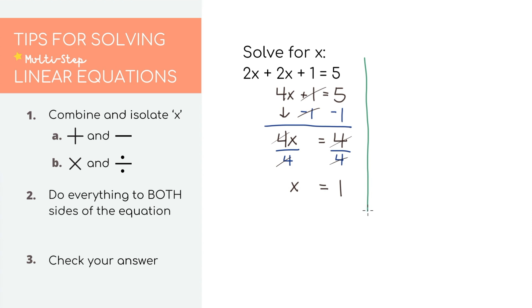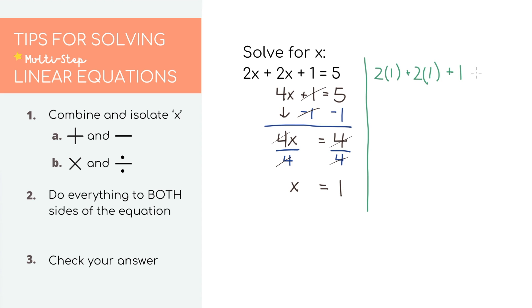Let's check our answer by plugging it back in. We get that 2 times 1 plus 2 times 1 plus 1 equals 5. Simplifying, we get that 5 equals 5, so we know we have the right answer.